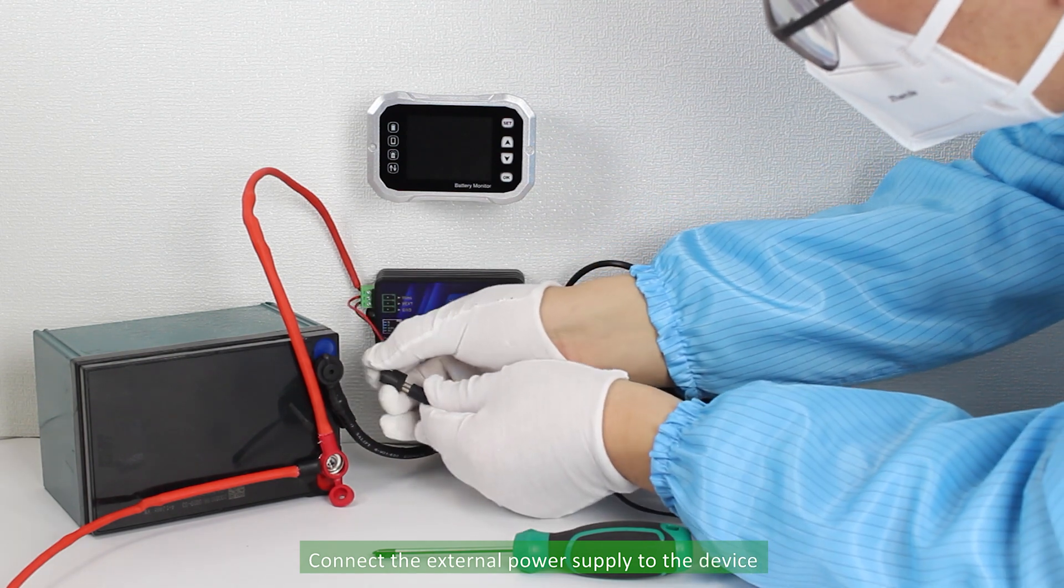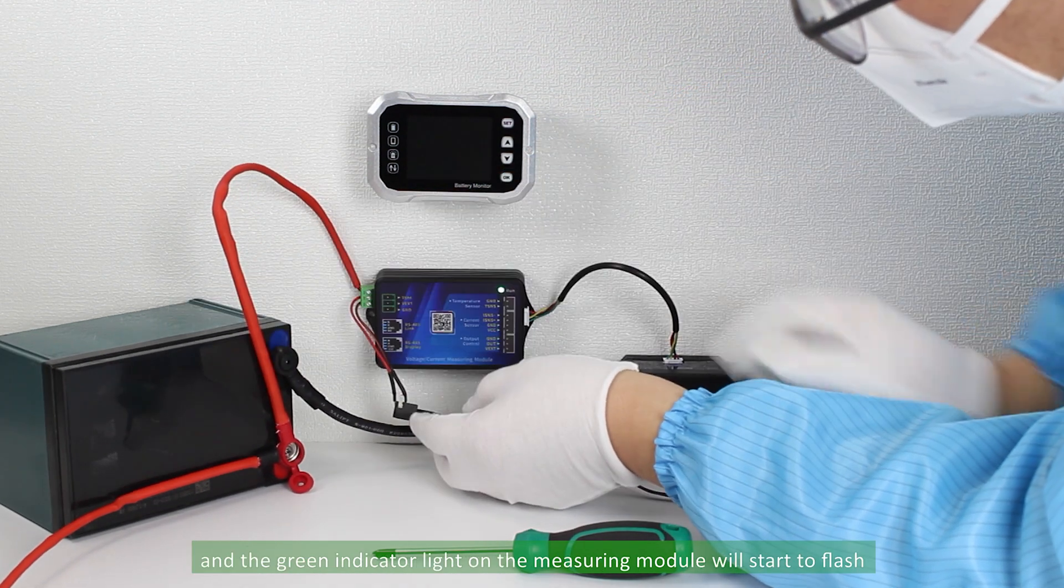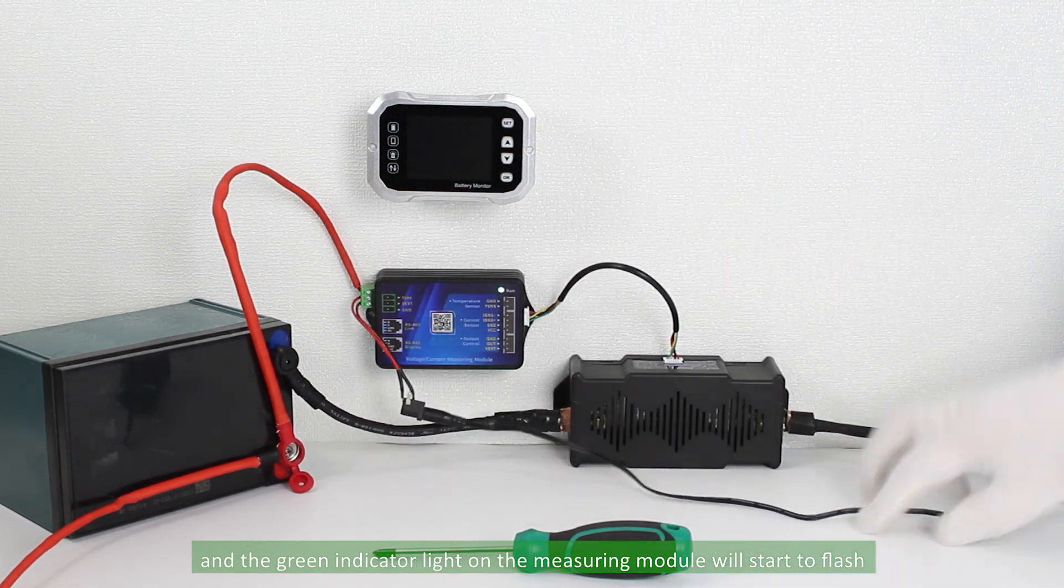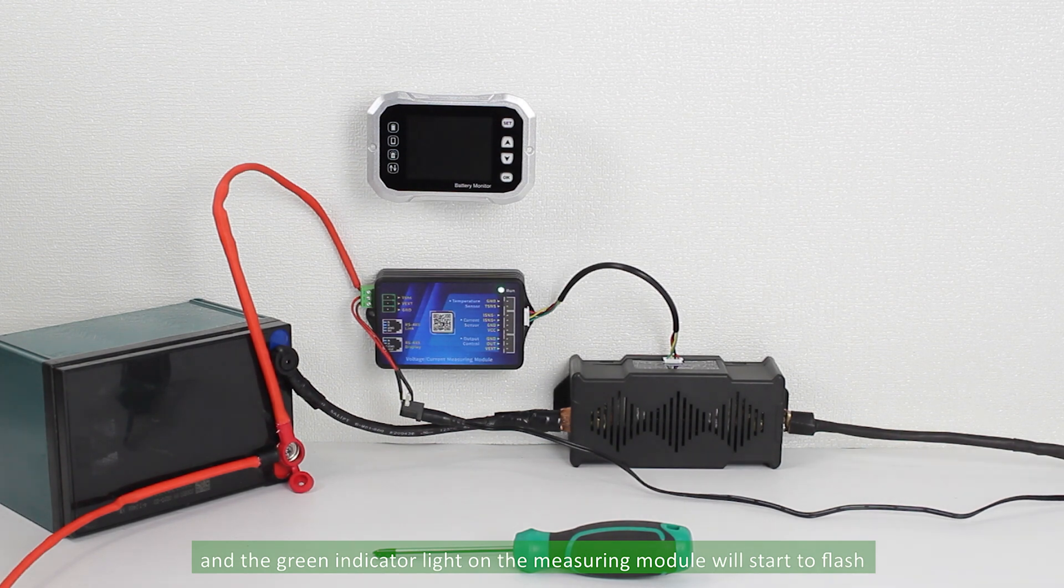Connect the external power supply to the device, and the green indicator light on the measuring module will start to flash indicating that the instrument has started to work.